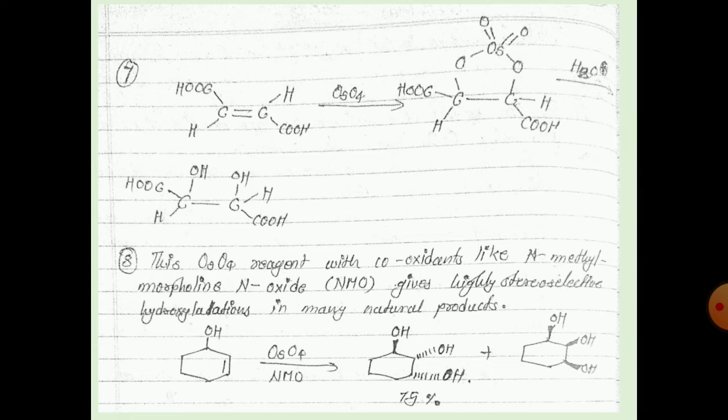Hydroxylation is carried out using OSO4 — osmium tetroxide. The OH groups can be added to either the same side (syn) or opposite sides. The stereochemistry of OH addition is determined by the face selectivity of the OSO4 attack.